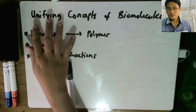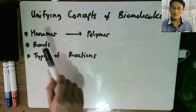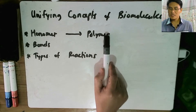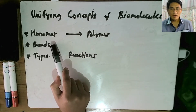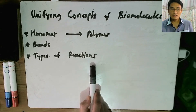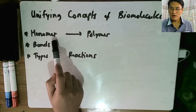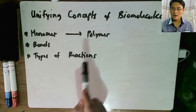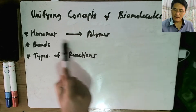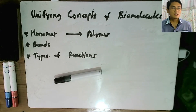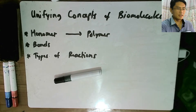In this video, we are going to be discussing the unifying concepts of biomolecules — the concept of monomers forming polymers, the types of bonds in each type of biomolecule, and the types of chemical reactions that happen when you polymerize from monomers and when you break down polymers back into their monomers. We have four prominent types of biomolecules: nucleic acids, carbohydrates, lipids, and proteins.